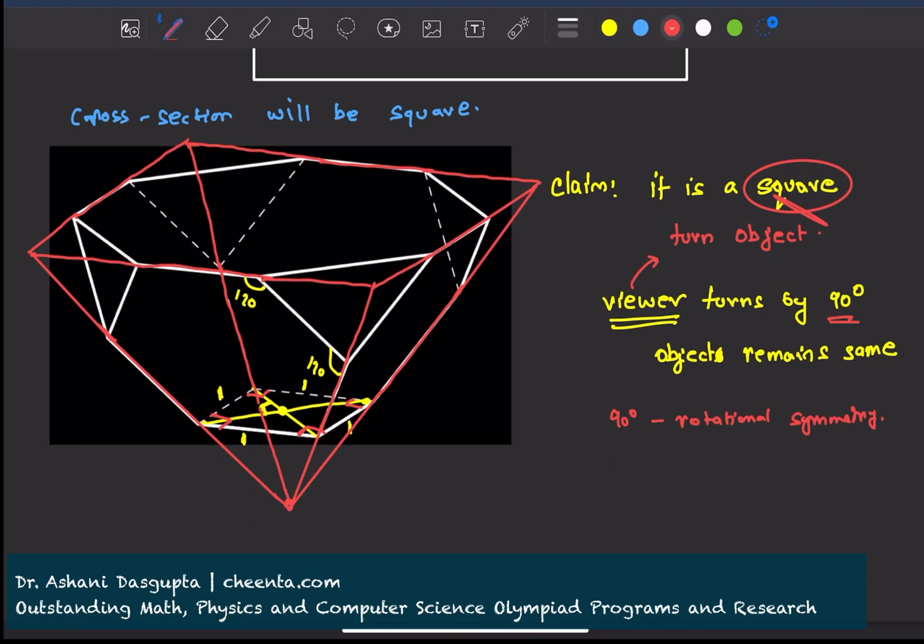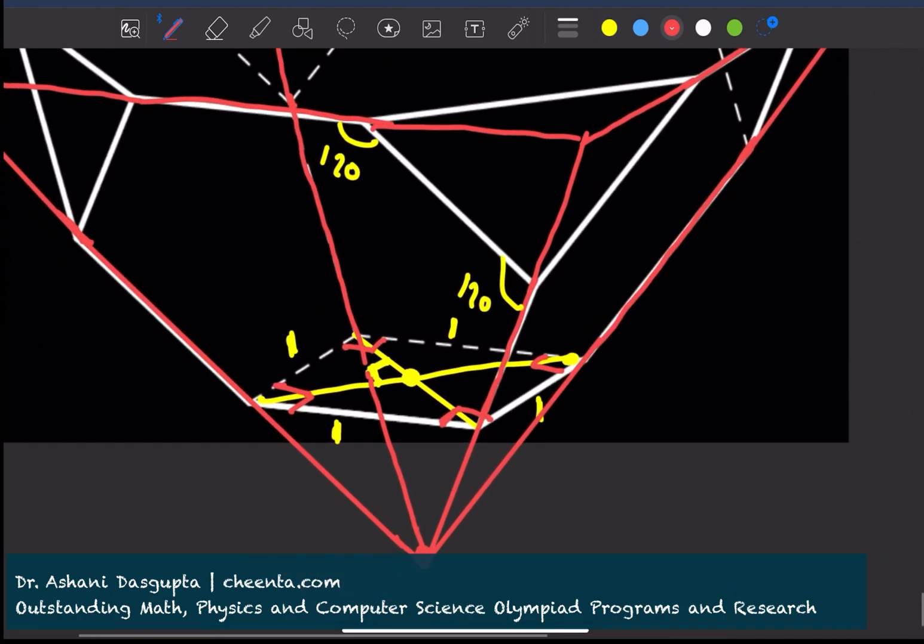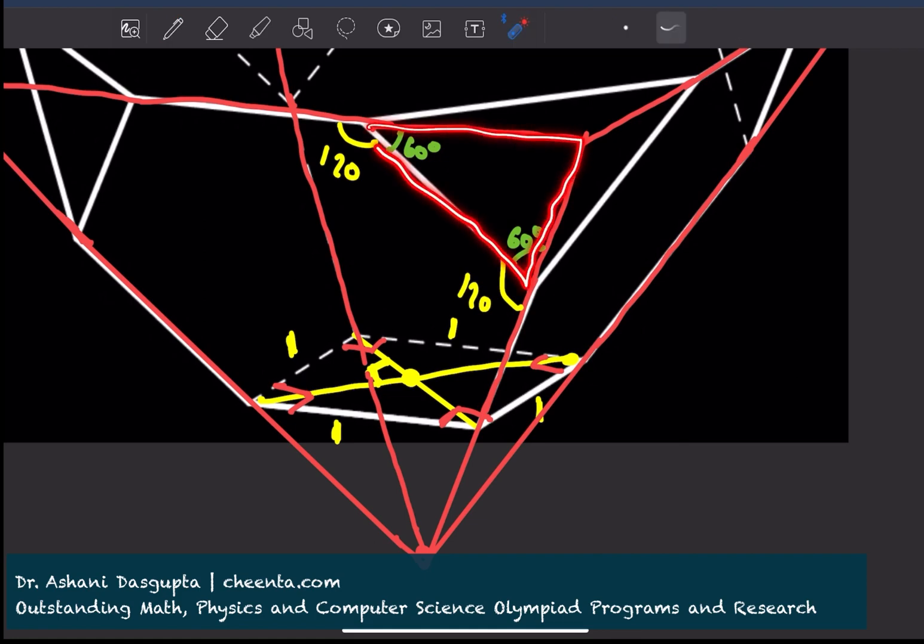Which means that this must be 60 degrees and this must be 60 degrees. That means that this is an equilateral triangle.